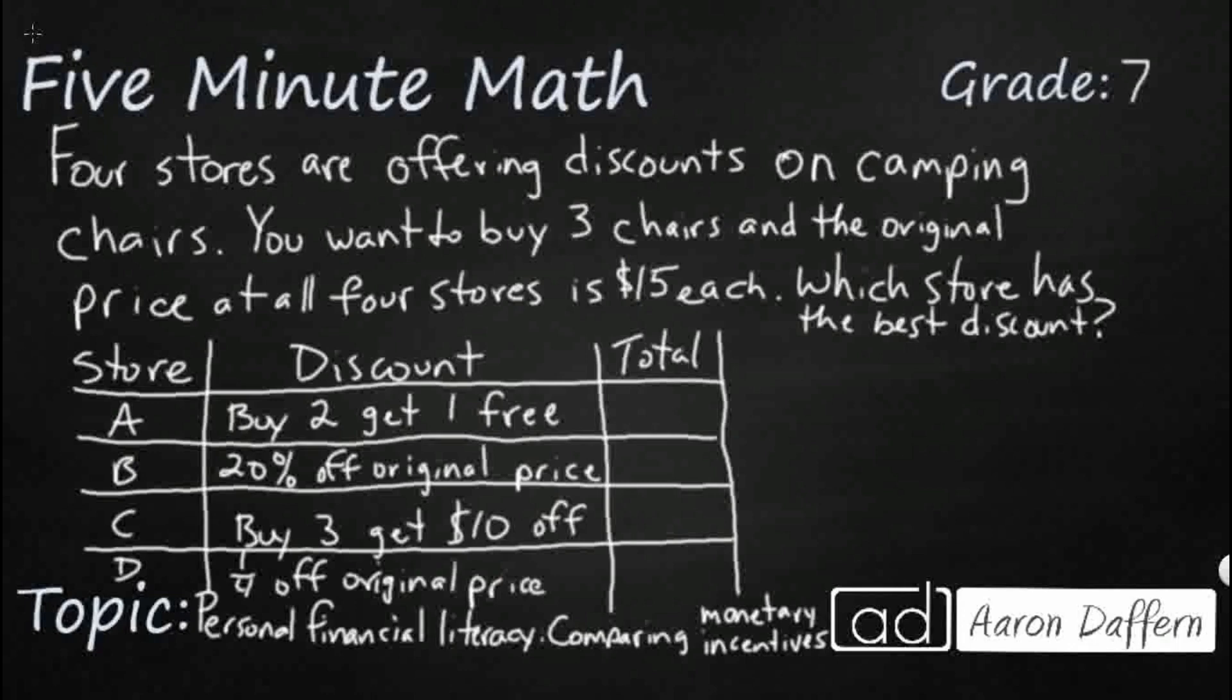So we have a sample problem here on the screen. Four stores are offering discounts on camping chairs - store A, B, C, and D. You want to buy three chairs. We have to keep that in mind. And the original price at all four stores is $15 each, but it's very common for stores to offer you some kind of discount. But they all give it to you in a different way. So we want to compare which store has the best discount for the price of three chairs.